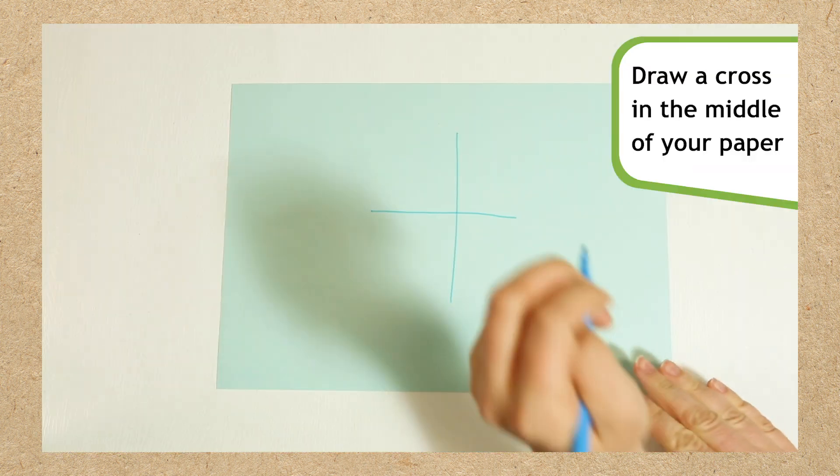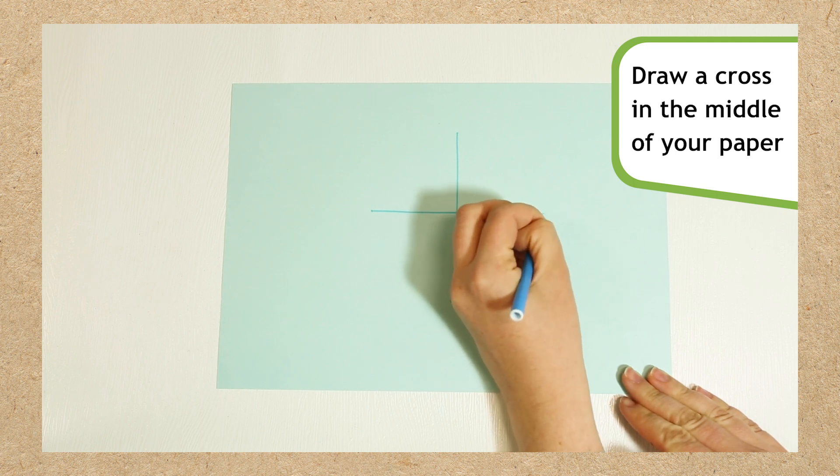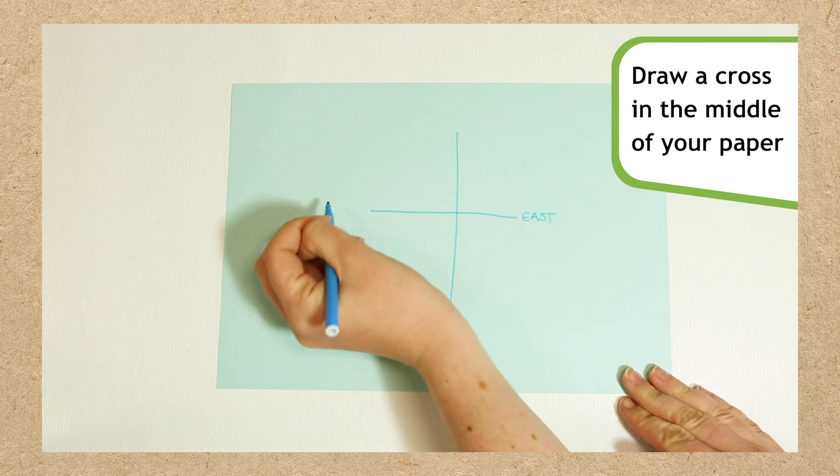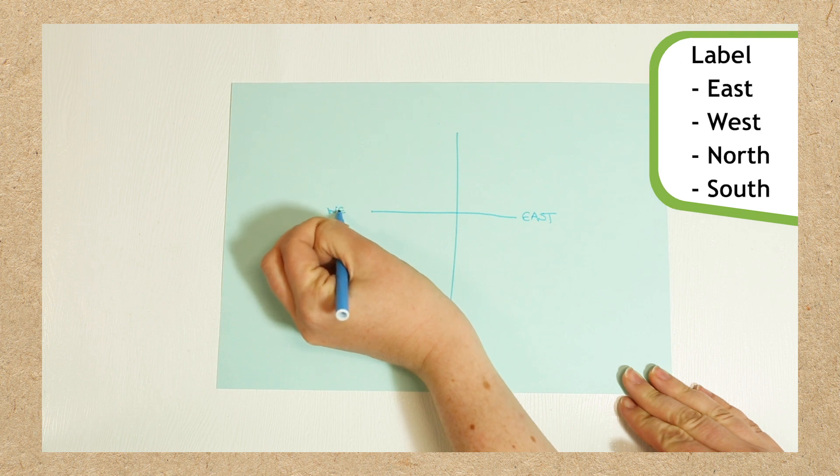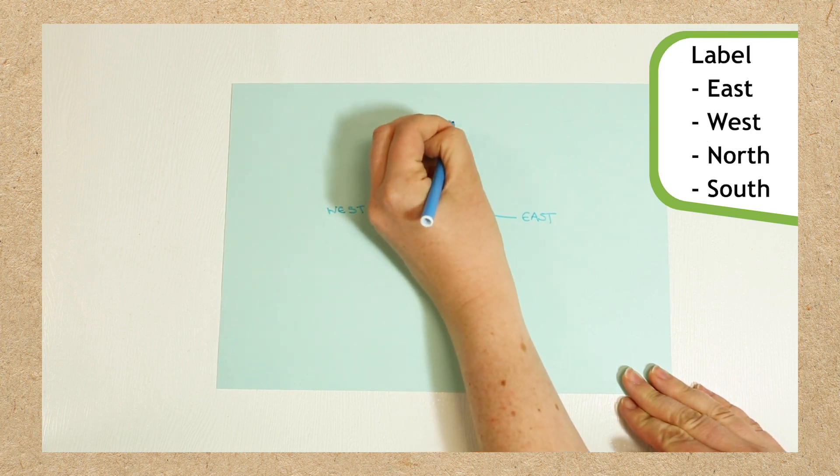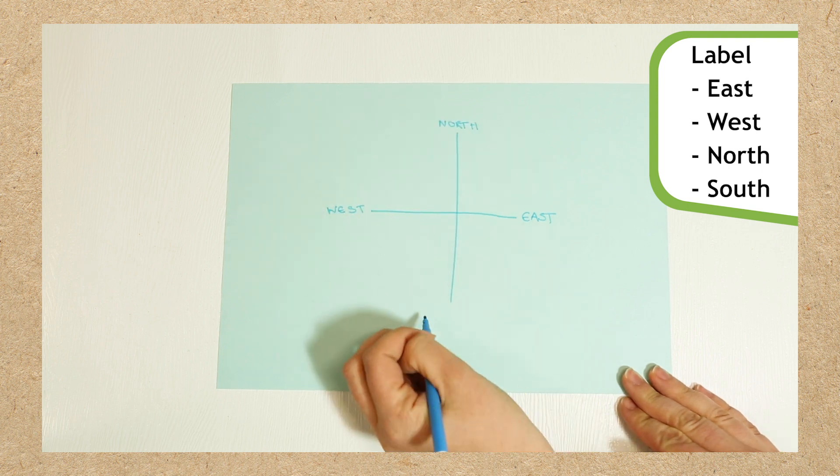Now you're going to make a sundial. Take a sheet of paper or a paper plate and draw a big cross in the middle. Write east on the right and west on the left, north on the top and south on the bottom.